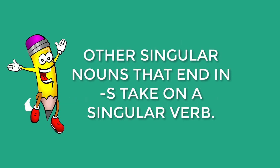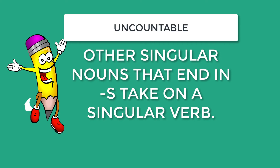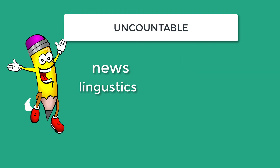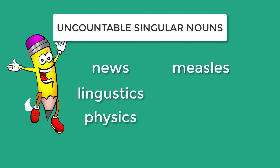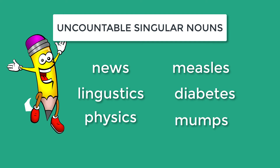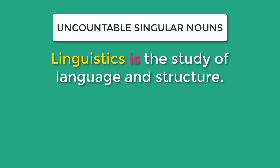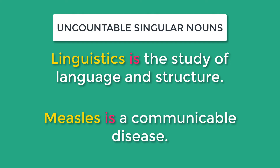There are other singular nouns that end in S that take on a singular verb, and this is because they are considered uncountable. For example, news, linguistics, physics, measles, diabetes, mumps, and cards. Linguistics is the study of language and structure. Measles is a communicable disease.